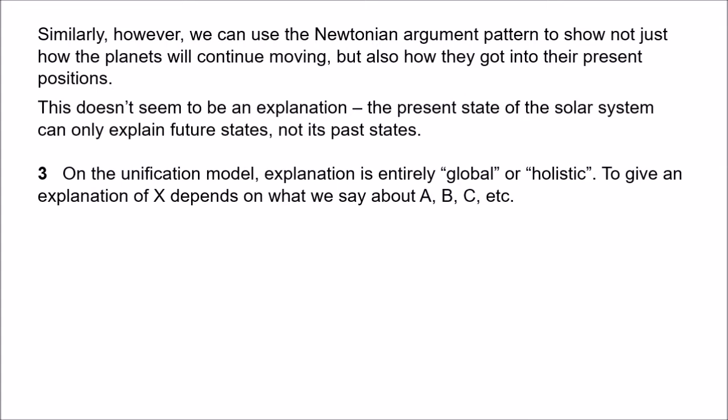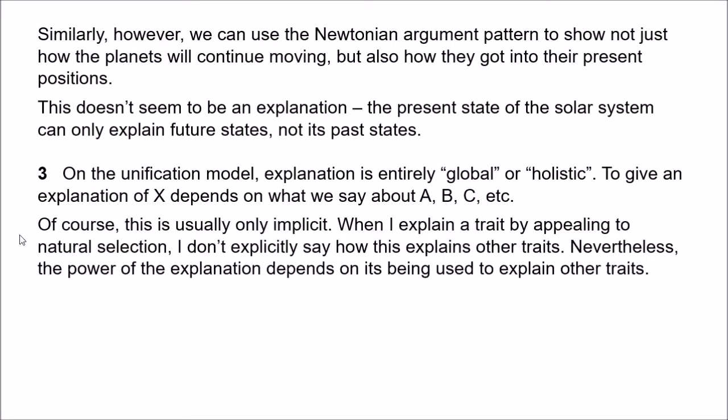There's no room here for what we might call merely local explanation, where we explain something without reference to other things. Even on the unification model, the appeal to other phenomena is usually only implicit — when we give an explanation we cite the general argument pattern without applying it to other cases. For example, we explain how a particular trait evolved by using the Darwinian natural selection argument pattern, leaving it implicit that this applies to many other traits. Nevertheless, every explanation requires that it can be applied elsewhere.